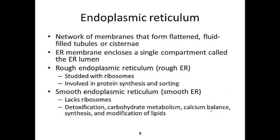Let's start with the ER. The ER represents a network of membranes that are sort of flattened. Inside the ER, the hollow space is called the lumen — that's the compartment. We can divide the ER into the rough and smooth ER based on the presence or absence of ribosomes. The rough appearance is caused by ribosomes, and because ribosomes synthesize protein, that's the main function of the rough ER. The smooth ER lacks ribosomes but contains enzymes involved in a variety of processes, including the modification of lipids, which is extremely important for building membranes.